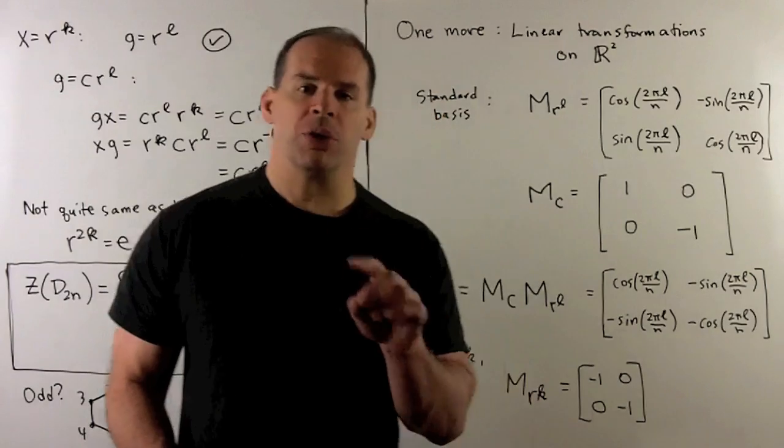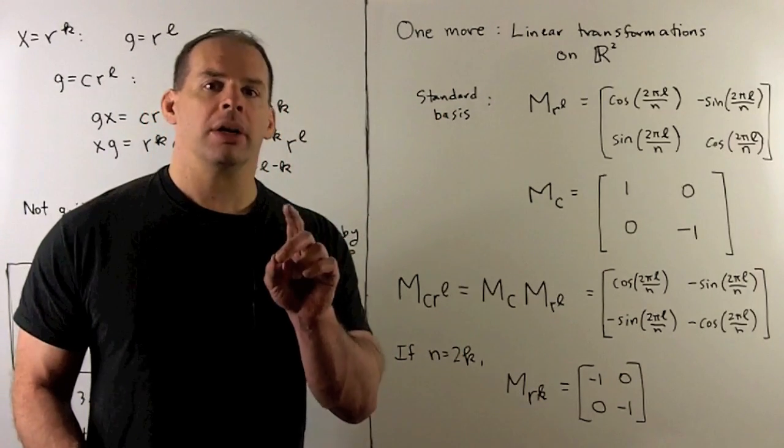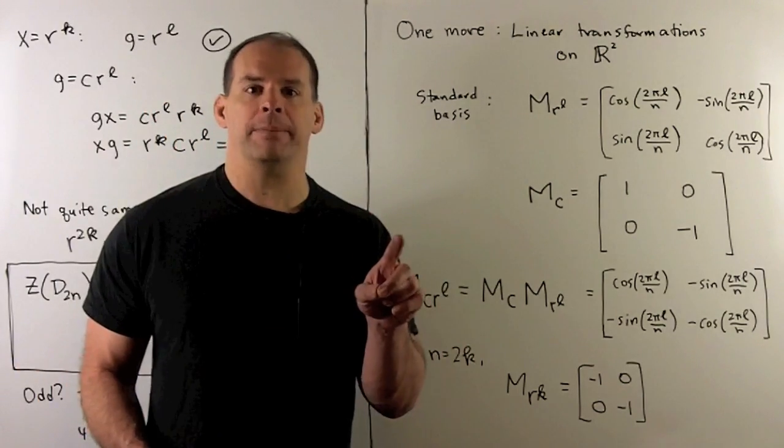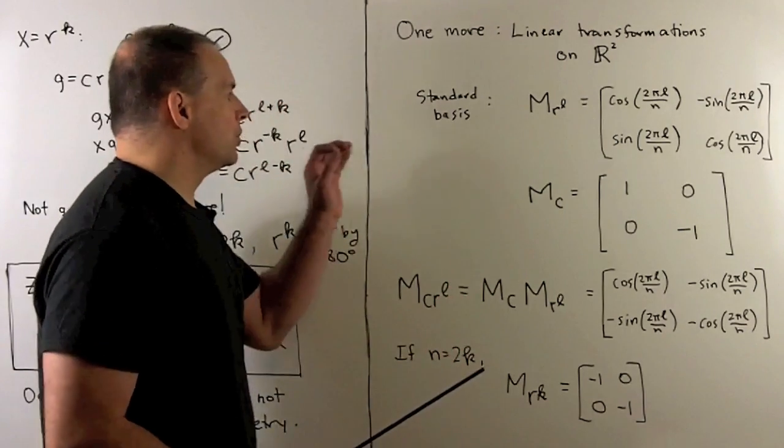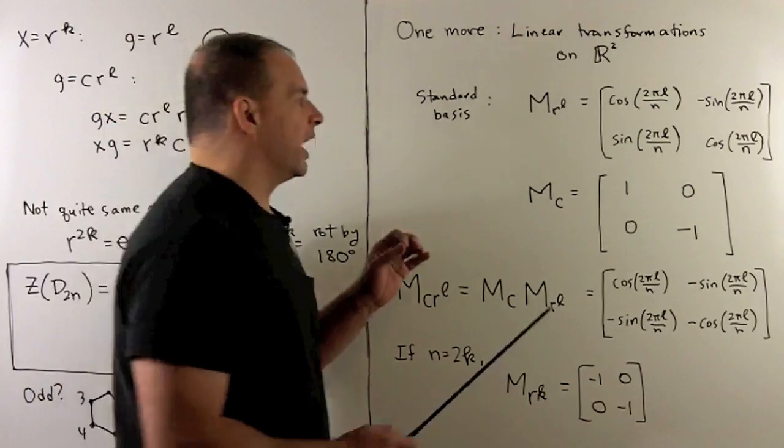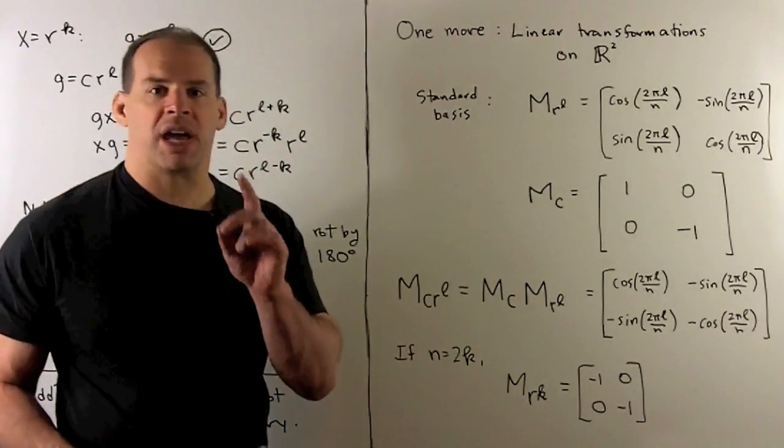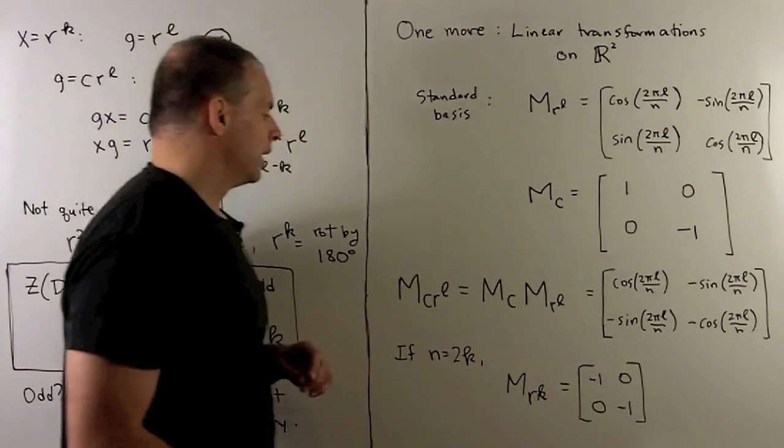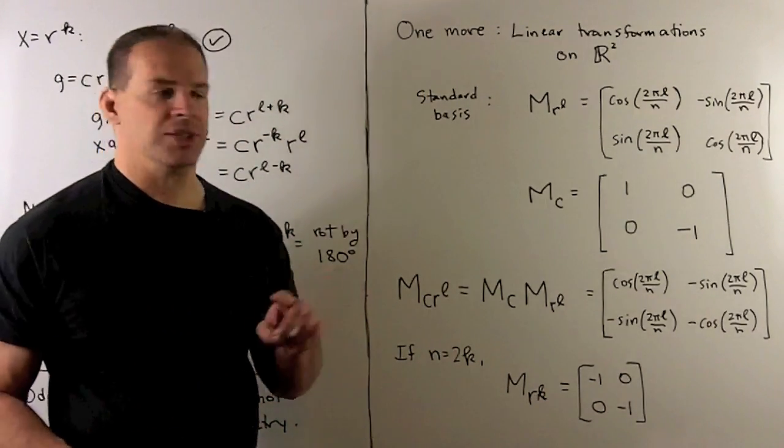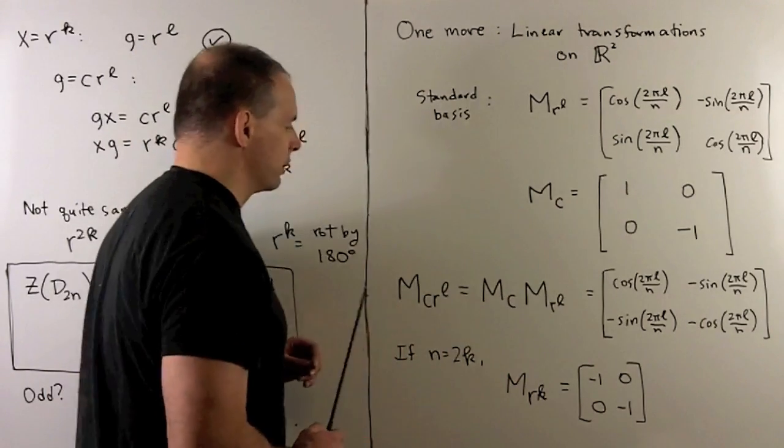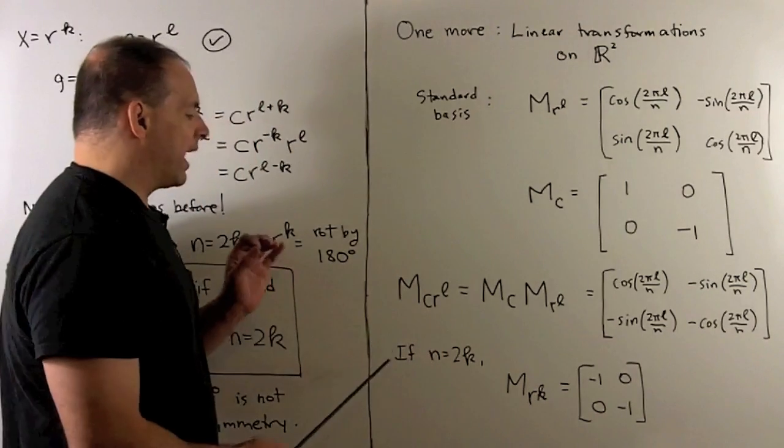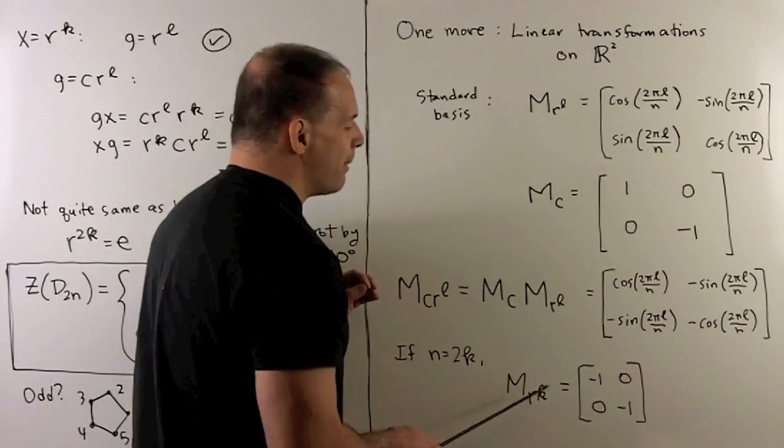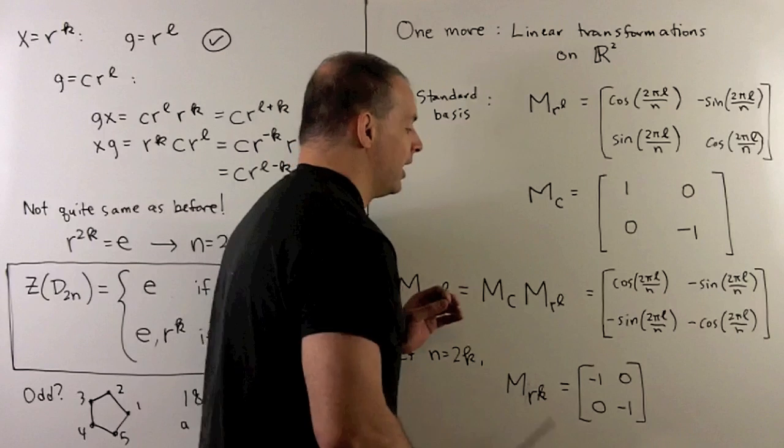We have one more way to present dihedral groups. This will work if you know linear algebra. We can consider each of these symmetries of the complex plane as linear transformations on R2. We choose the standard basis. I can write every rotation in this form. We can write complex conjugation in this form: fix the x-axis, flip the y-axis. And if I want to find our reflections, we just multiply this matrix against any of these matrices. You'll note, when we have n equal to 2k, if I want that element that's in the center, when you calculate here, you're just going to get minus the identity. And as a matrix, that certainly commutes with everything.